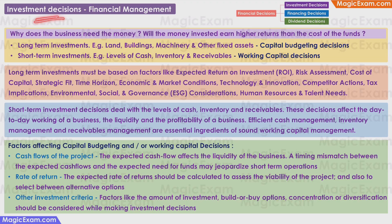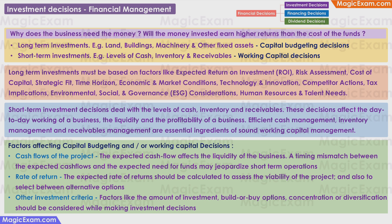Investment decisions are the first type of decisions in financial management. For making investment decisions, we need to understand why does the business need the money and whether the money invested through the business will earn higher returns than the cost of the funds. The business may need money for long-term investments like land, building, machinery, and other fixed assets.